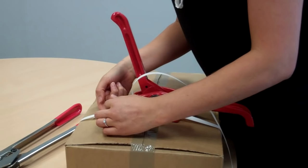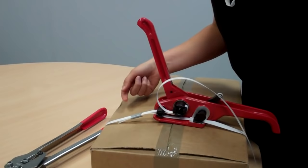Next, take one of your metal tip seals and pop that over the pieces of strapping that are coming out of the front of the tool.